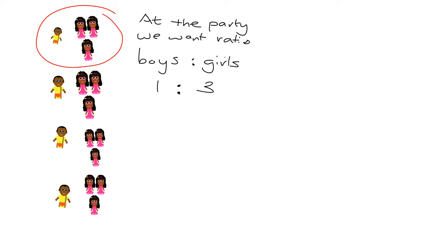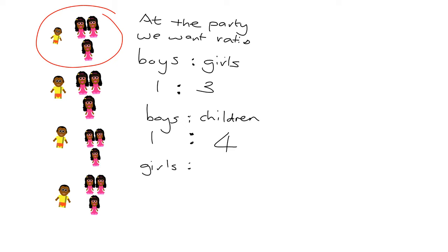In each group, for one boy you have three girls. You could also say that in every group of four children there should be one boy, and out of every group of four children you should have three girls. So we can write down those two ratios: the ratio of boys to children is 1 to 4, and the ratio of girls to children is 3 to 4.